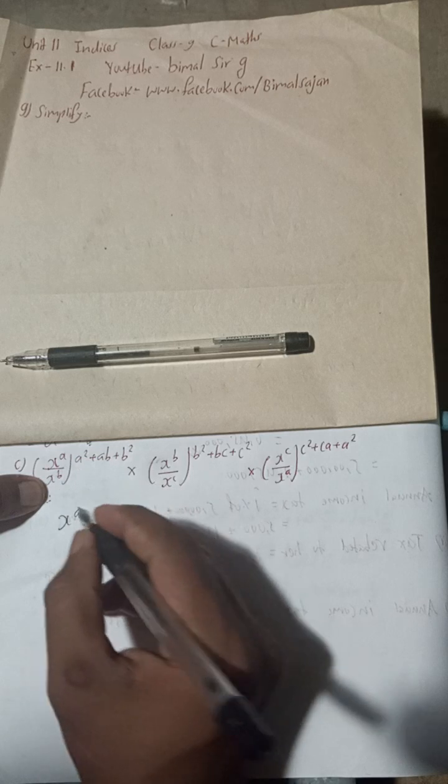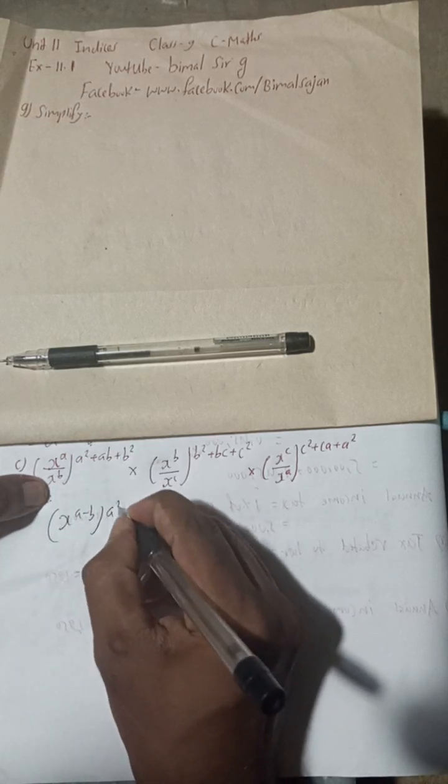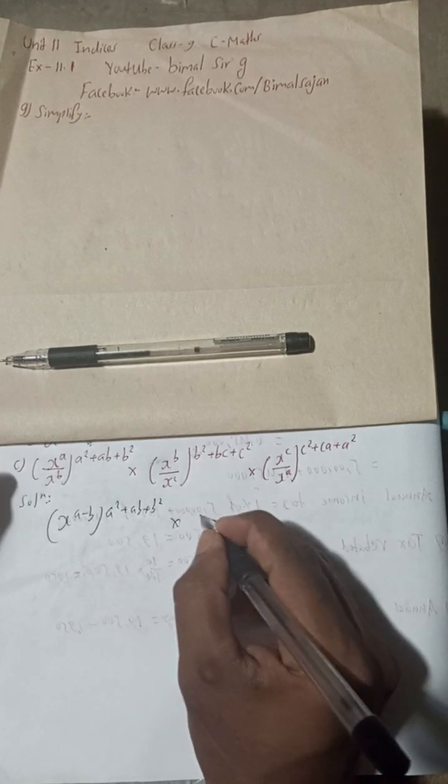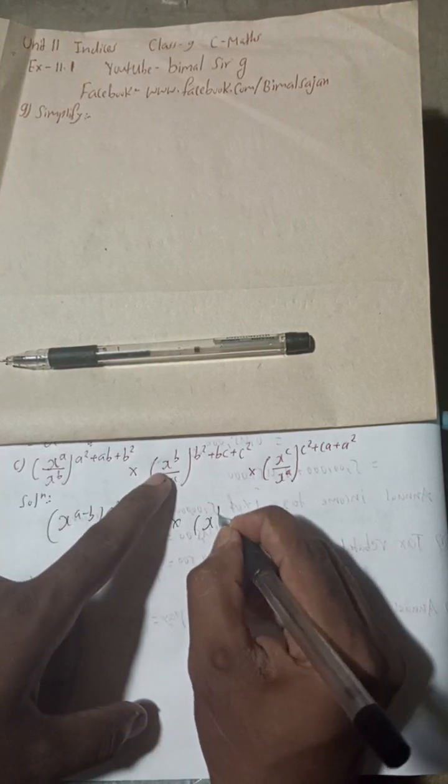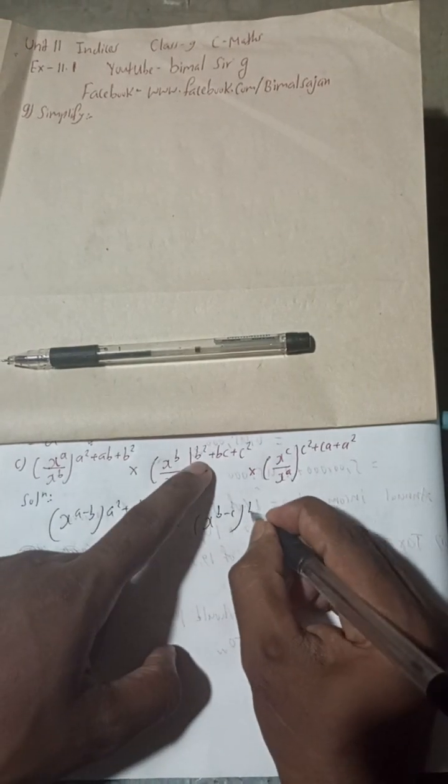When it is plus b it becomes minus b, and minus b becomes plus b, so it will be minus b. Then a² + ab + b² as it is. Again here, same x to the power b and this plus c becomes minus c.